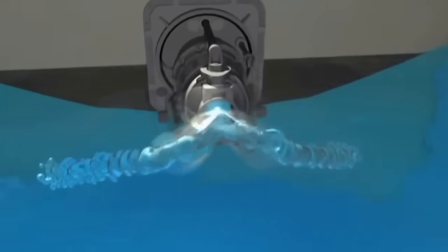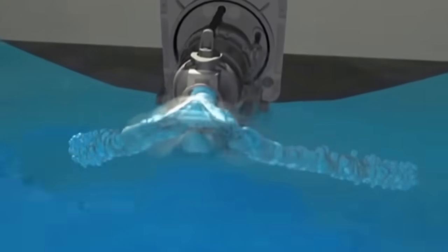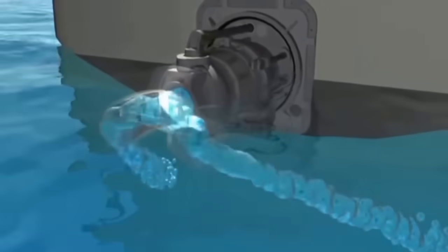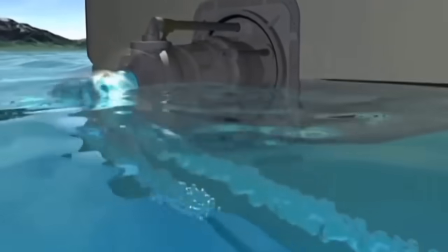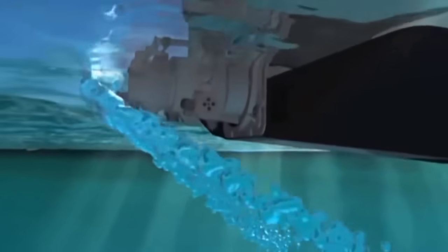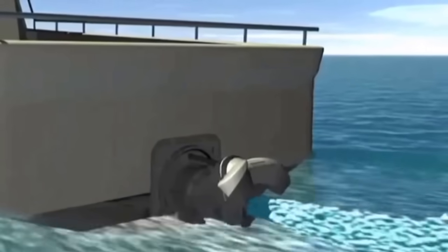The split duct astern deflector works by directing the jet stream down and to each side, so the water flow is kept clear of the transom and Waterjet intake. The result is high reverse thrust and sideways thrust.